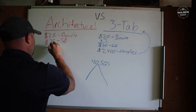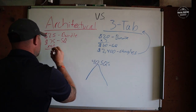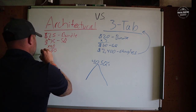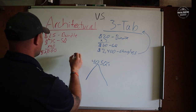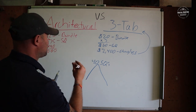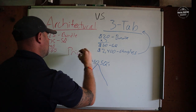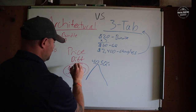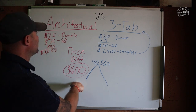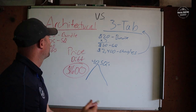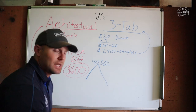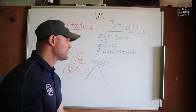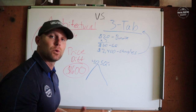We multiply the architectural cost by 40 and we're talking about $3,000. So we're talking about a price difference of only about $600 to use a higher, better product in architectural shingles. It's really not that much more expensive to go with architectural shingles. Now let's get on with the rest of the video so you can see why it's a better option most of the time.